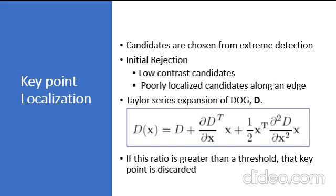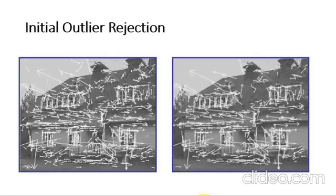So it eliminates any low-contrast interest key points and edge key points, and what remains are strong interest points. From 832 key points, only 536 key points remain using the threshold 0.03.